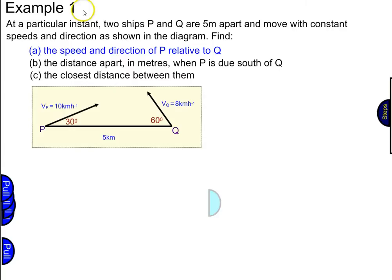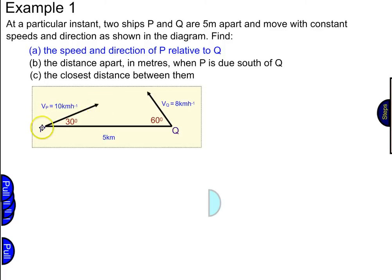I'm going to go through a couple of examples. In this video, we're going to have a look at example 1. At a particular instant, two ships P and Q are 5 kilometres apart. They move with constant speeds and directions as shown in the diagram. The velocity of P is 10 kilometres per hour making an angle of 30 degrees, and the velocity of Q is 8 kilometres per hour making an angle of 60 degrees.